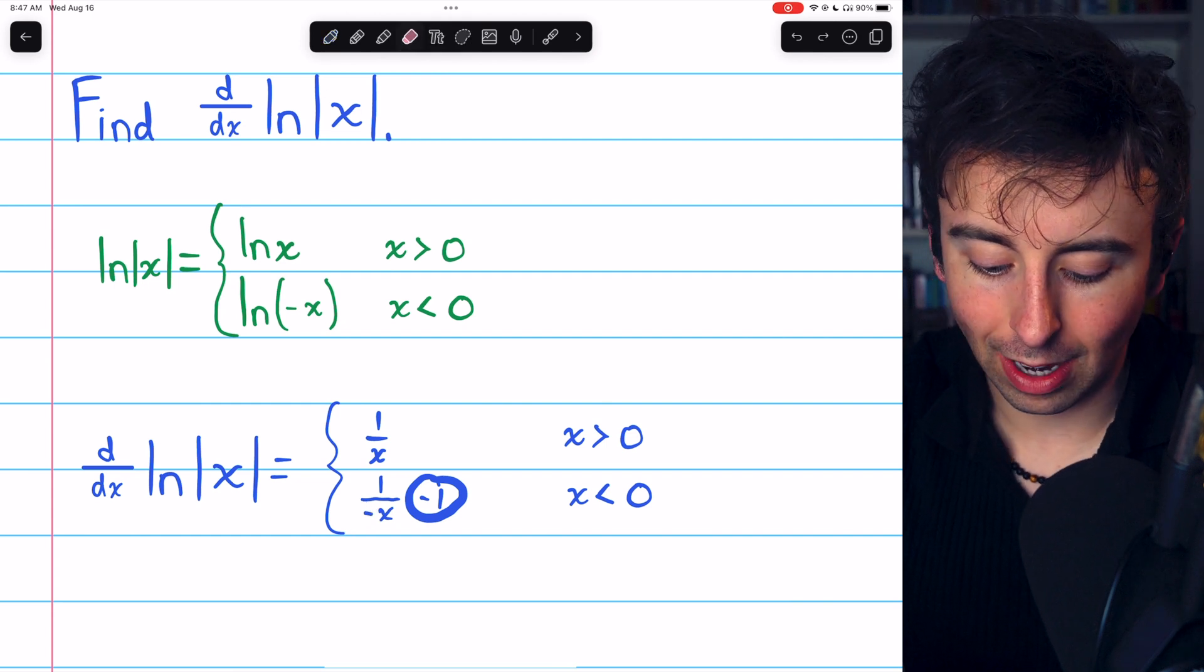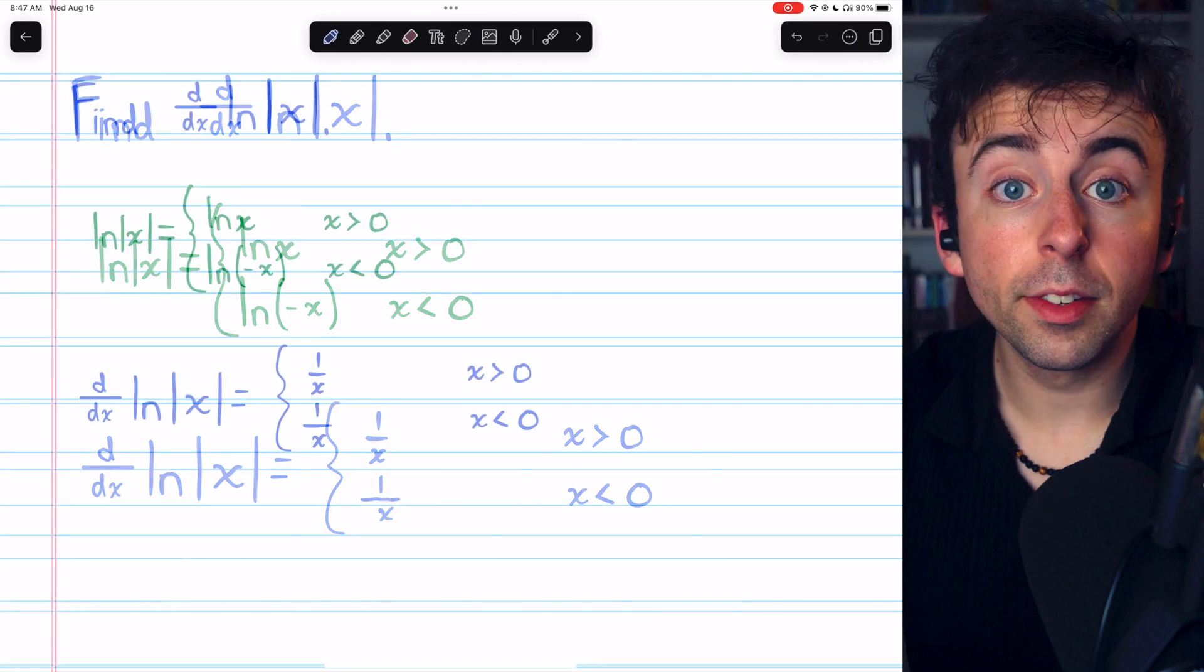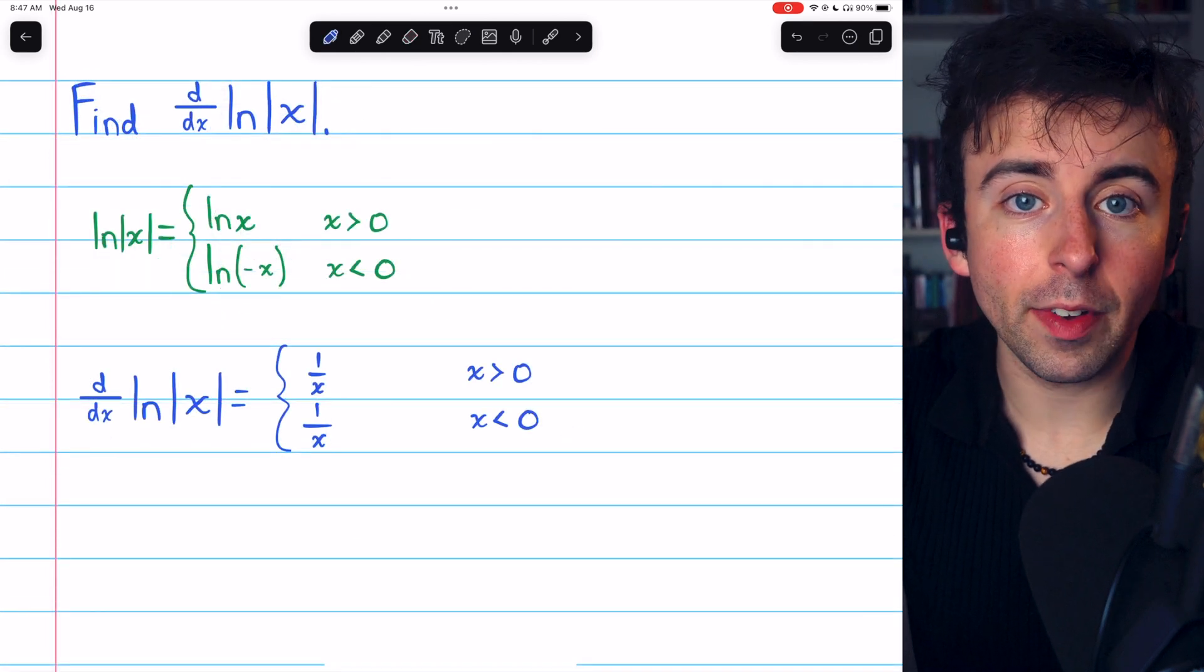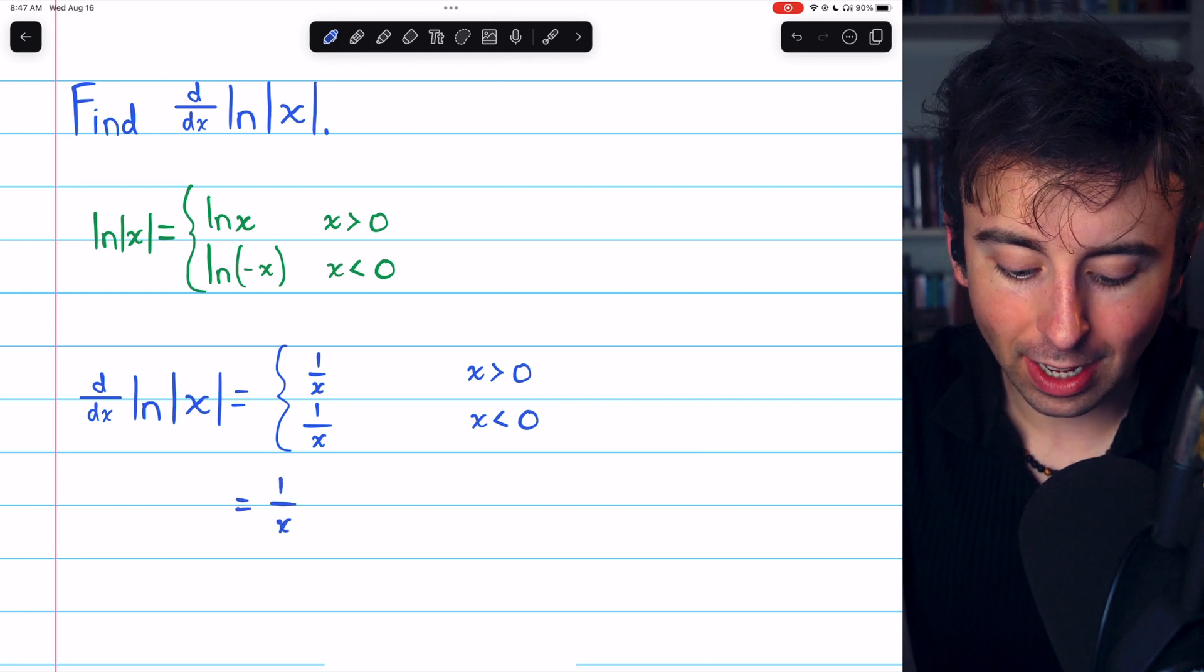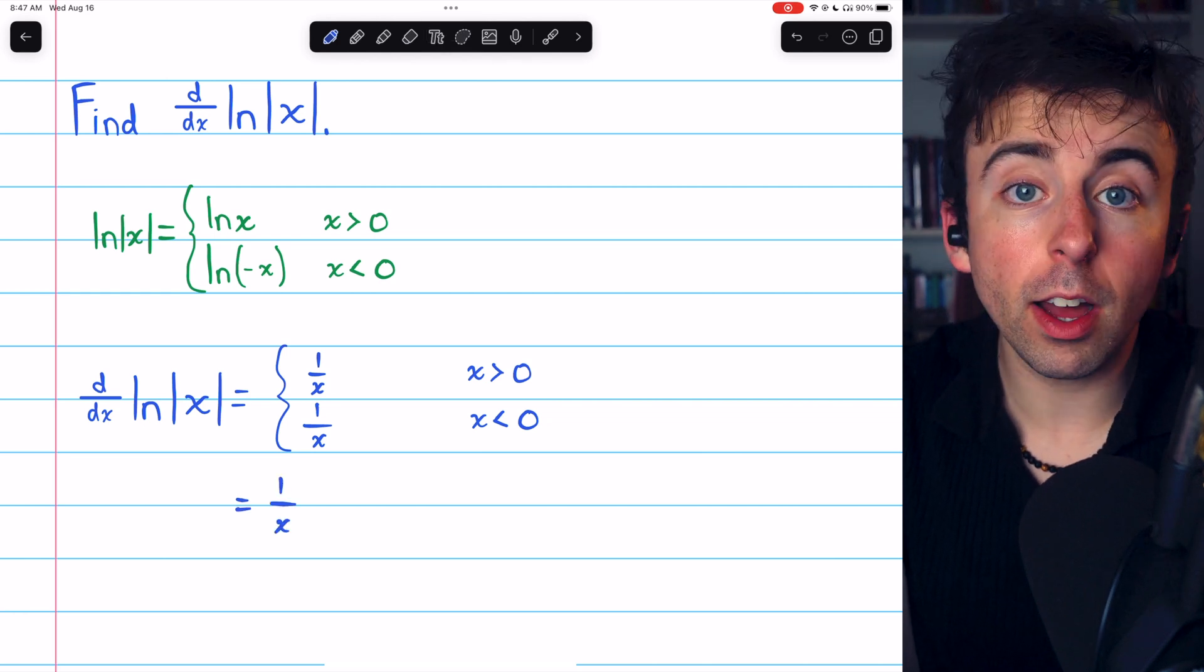In fact, this turns out to just be 1 over x. So the derivative of the natural log of |x|, where it's defined anyways, is just equal to 1 over x, just like the standard natural log function.